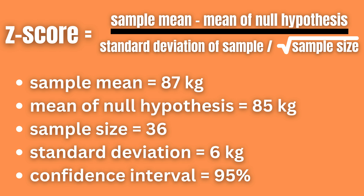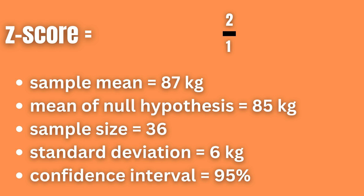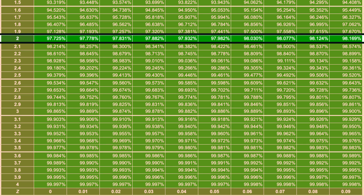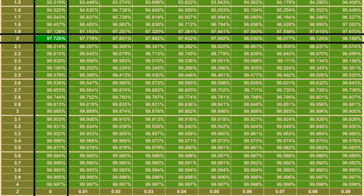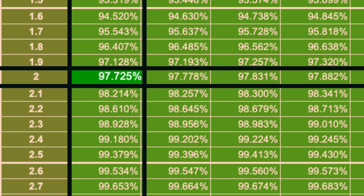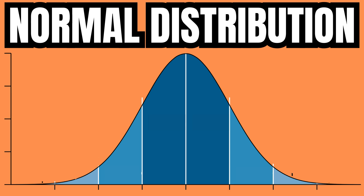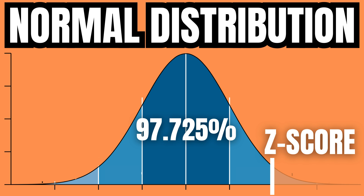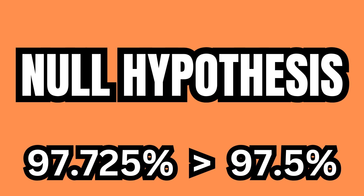Now let's plug in the numbers into our formula and simplify. This gives us a z-score of 2.0. If we pull up a z-score table, we find that the probability associated with 2.0 is 97.725 percent. Remember, this shows us the area of the normal distribution to the left of the z-score, meaning that it includes all of this area. This is slightly more than 97.5 percent.